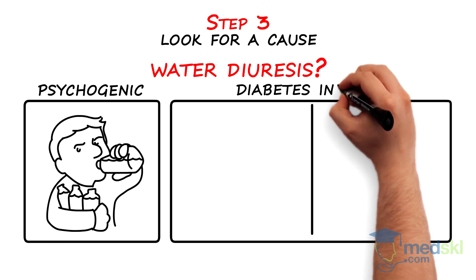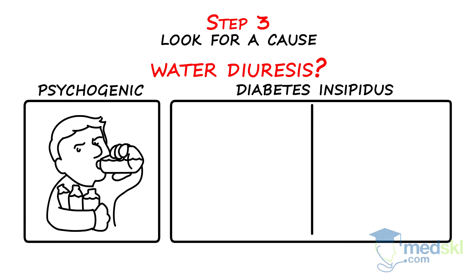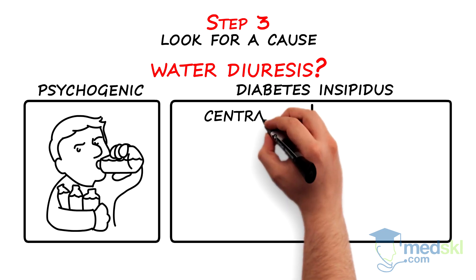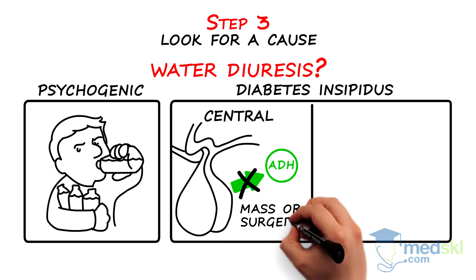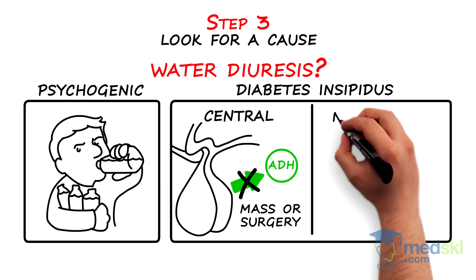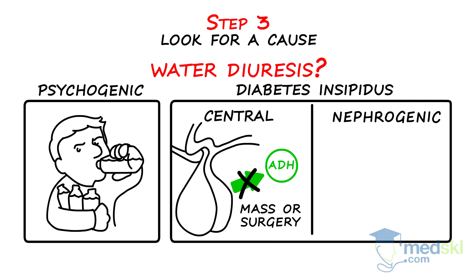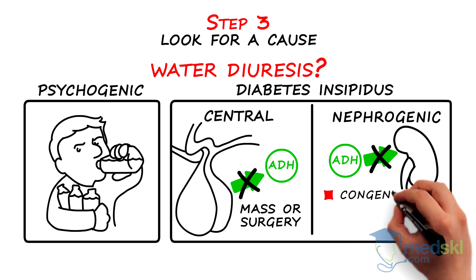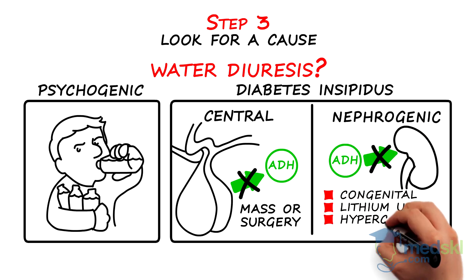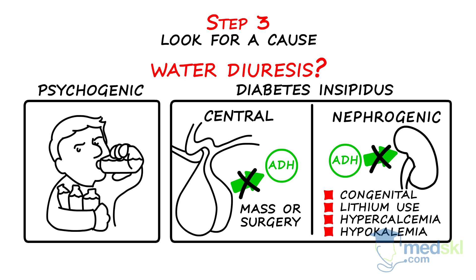Next, in diabetes insipidus or DI, the high urine output is driving the drinking. There are two forms of DI: central, with loss of ADH secretion from the posterior pituitary from things like pituitary mass or following pituitary surgery; or nephrogenic DI, when the kidneys do not respond properly to ADH — a situation that may be congenital or linked to lithium use, hypercalcemia, and hypokalemia.